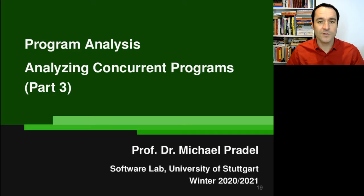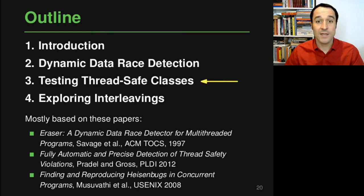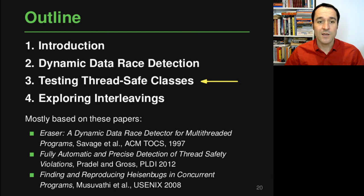Hello and welcome back to Program Analysis. This is part three of the lecture on analyzing concurrent programs. What we want to do in this third part is to look at a technique for testing thread-safe classes. As for the other parts of this lecture, this part is also based on a paper, and if you're interested in more details about this technique, please have a look at it there.